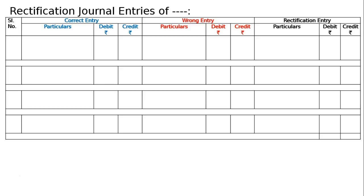The first one: a cheque for 10,000 received from Rajan on which 200 cash discount was allowed. The cheque was not honored on the due date and the amount of discount was credited to discount received account. When we receive the cheque, we write down the entry like this: bank account debited, discount allowed account debited to Rajan.